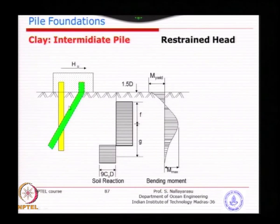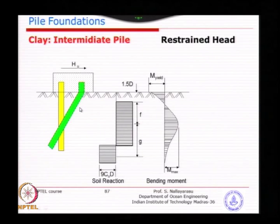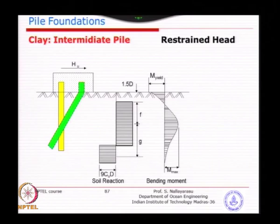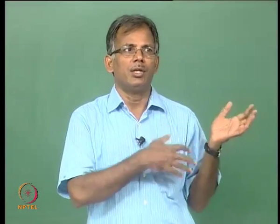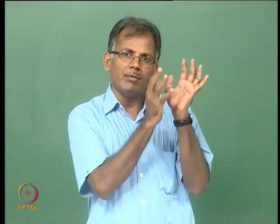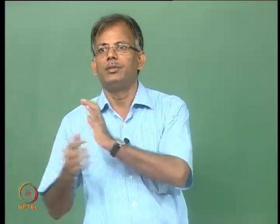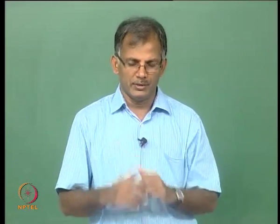Instead of assuming completely rigid, the elastic values are taken - if it is a concrete pile you can use EI, or for a steel pile similarly. You just incorporate that, but as long as your EI value of the pile is very large compared to the soil EI value, that is where the difference lies.